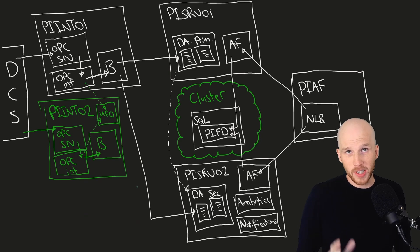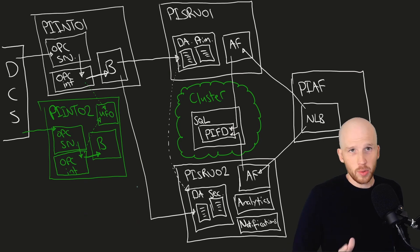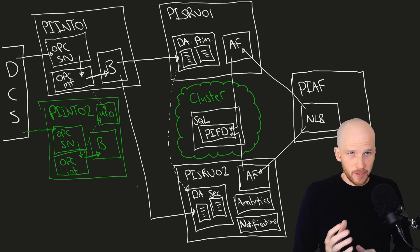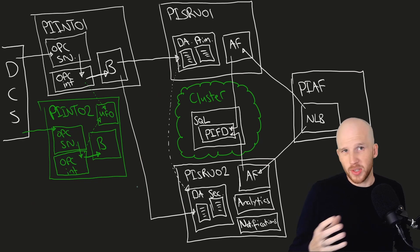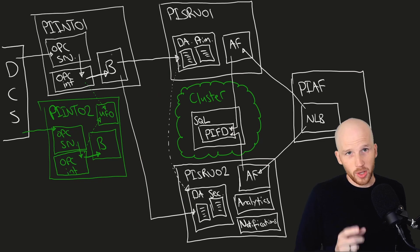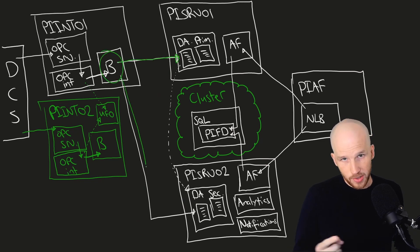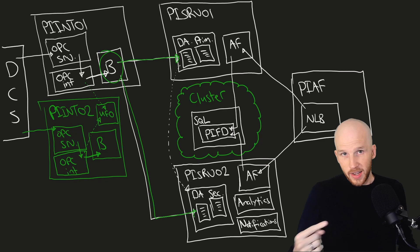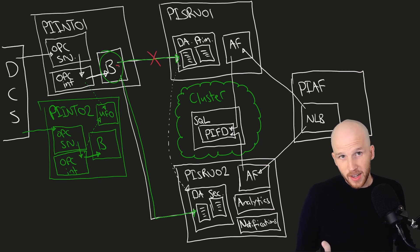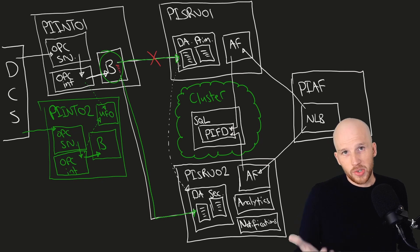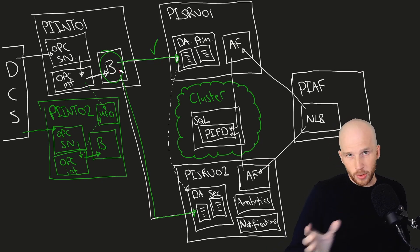So we have both interfaces set up and buffering to both servers. We'll assume that we're using Hot Failover. In Hot Failover, both interfaces are reading from the source at all times, but only one of them is sending data to both data archives. If the interface can't connect to one of the data archives, it'll buffer data for that archive but continue to send data to the other one. Once it comes back, the buffer will flow through.